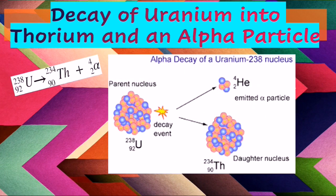First of all, we will study the example of the decay of uranium into thorium and an alpha particle. Uranium-238 decays into Thorium-234 by emitting an alpha particle. This is the equation that represents this kind of decay.